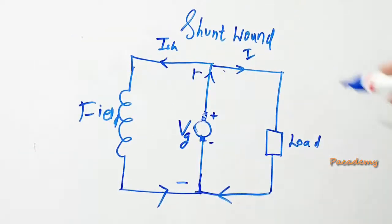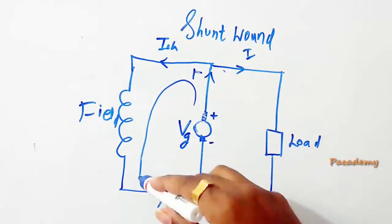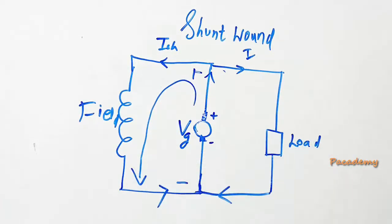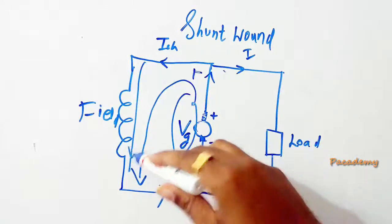Shunt wound generators are those in which the field windings are connected directly in parallel with the generator, and the full voltage of the generator is applied directly across the field windings.